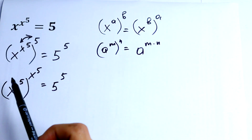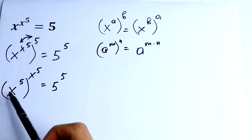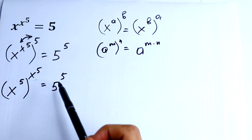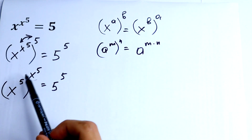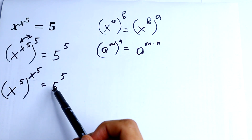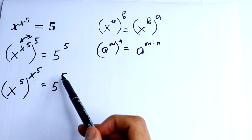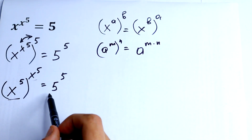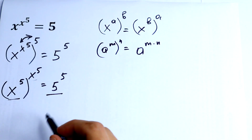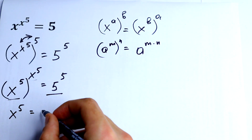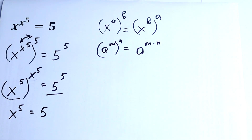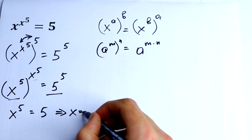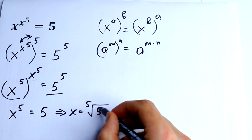So what do we have right here? We have base x to the 5th power, and the exponents are x to the 5th power and 5 to the 5th power. We have the same base and same exponent on both sides, so our base must equal our base on the right: x to the 5th power equals 5. Taking the 5th root of both sides, x equals the 5th root of 5.